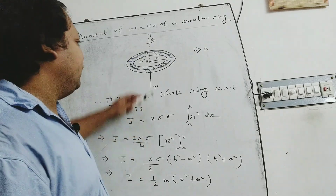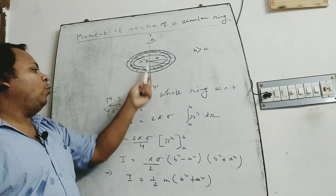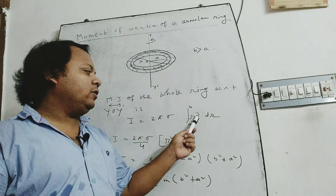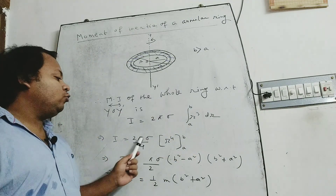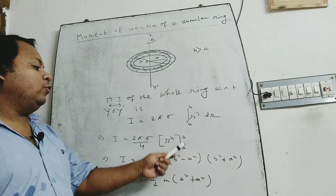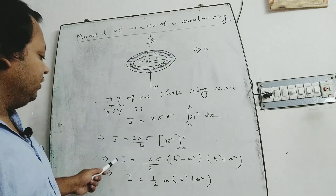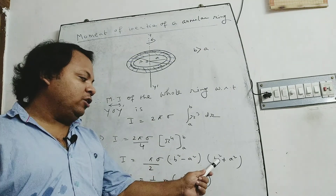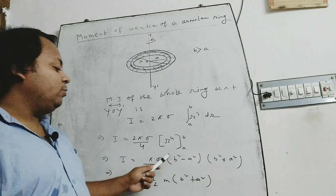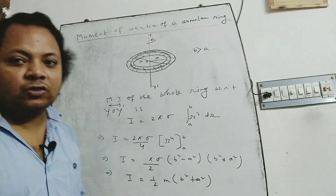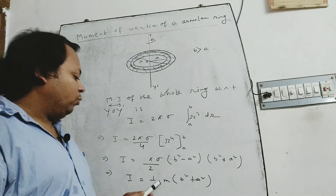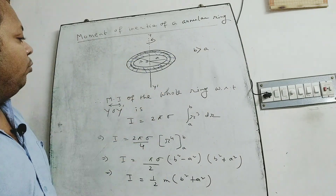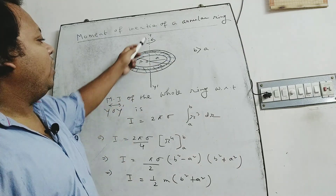Therefore, the moment of inertia of the whole ring with respect to yOy prime axis is I equal to 2 pi sigma times the integration from a to b of r cubed dr. This gives I equal to 2 pi sigma by 4 times r to the power 4 evaluated from a to b, which simplifies to I equal to pi sigma by 2 into b squared minus a squared into b squared plus a squared. Since pi sigma into b squared minus a squared equals m, the mass of the ring, therefore I equals one half m into b squared plus a squared.